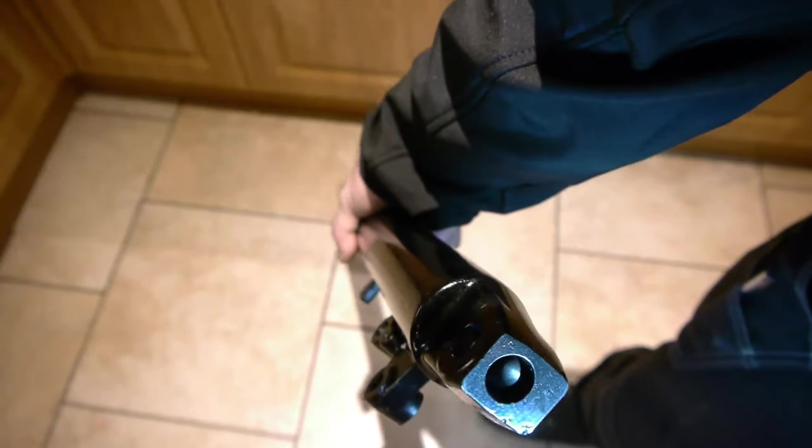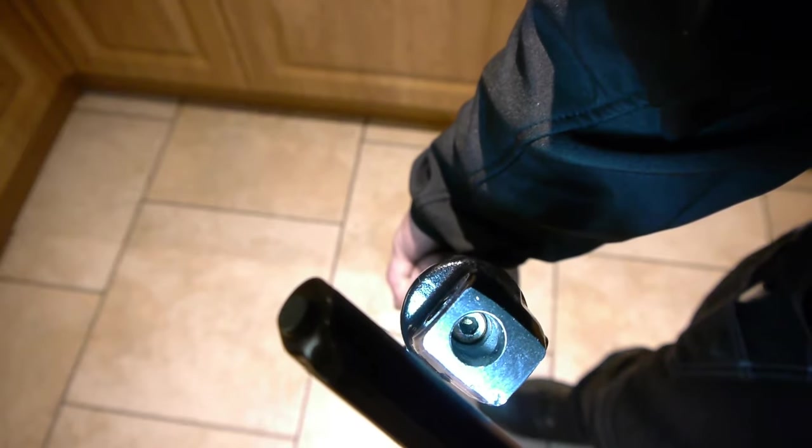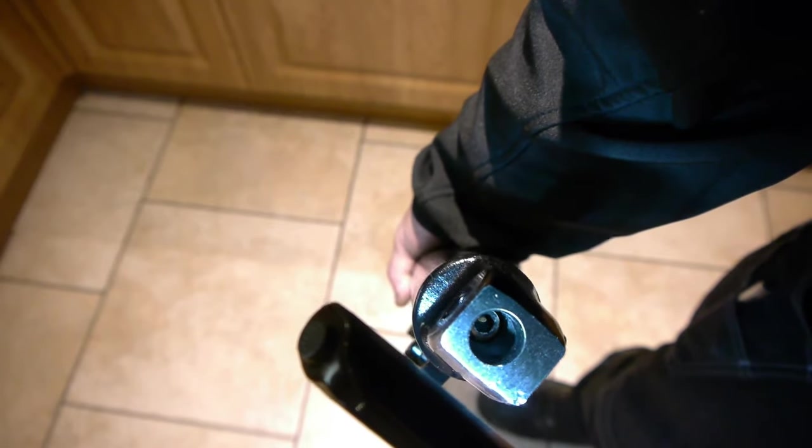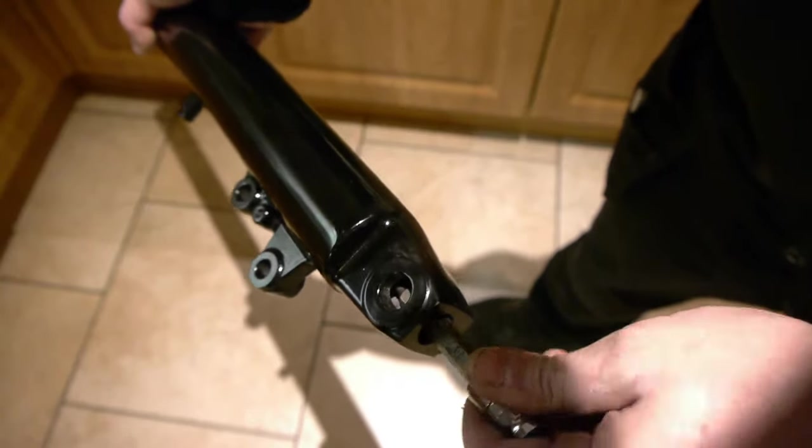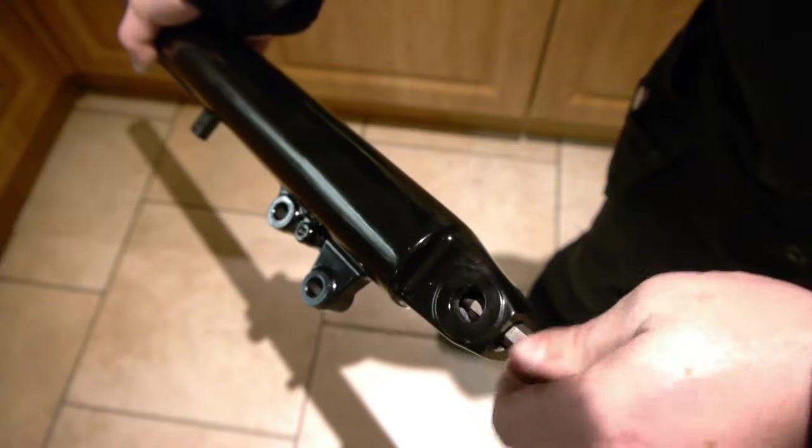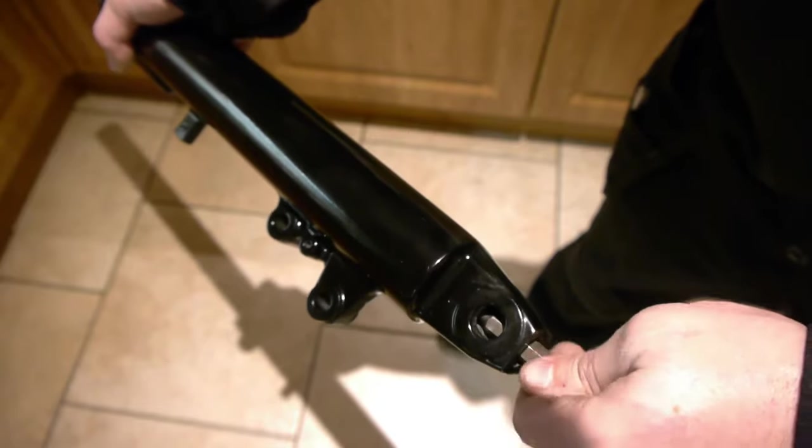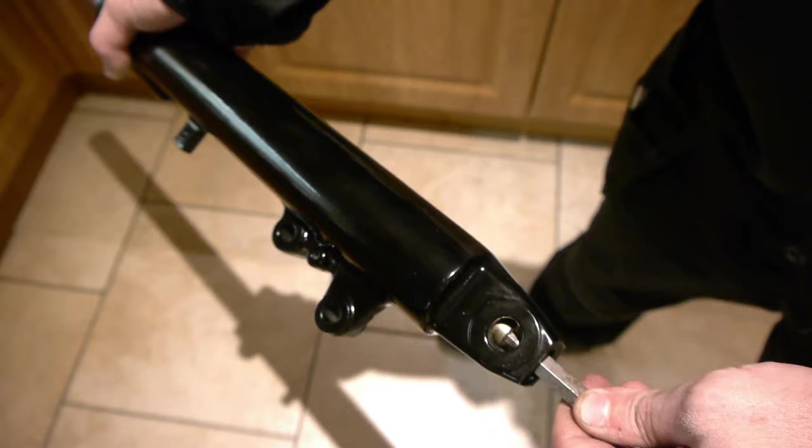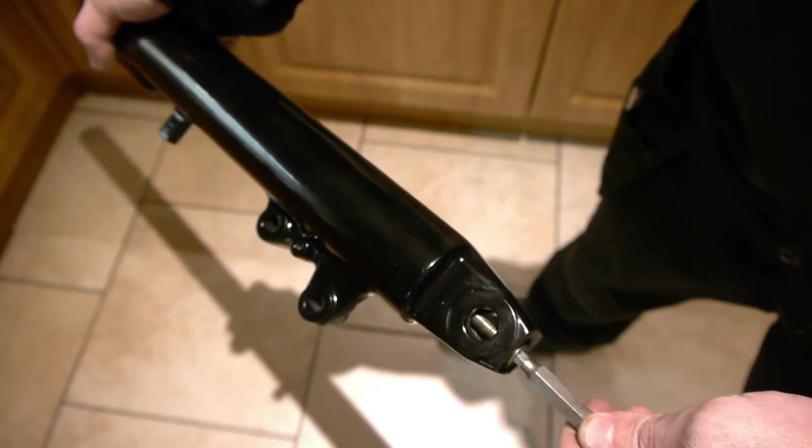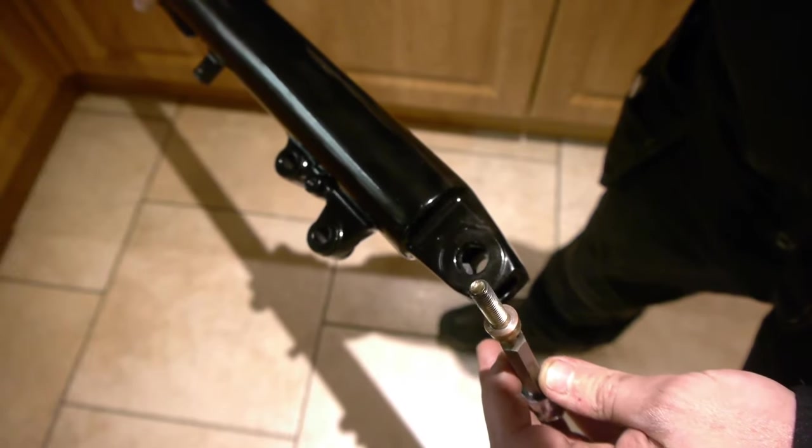Next, on this particular one which is off my Suzuki GSX-F, there's a little 6mm Allen key bolt down here. We're going to loosen that and take it out, and this will allow the inner tube to come out.